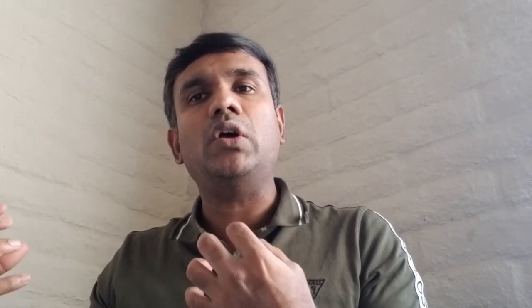So these are the key benefits of Docker and Kubernetes: first, reproducibility; second, scalability; third, zero downtime deployment and recovery of the old model in case something goes wrong. This is not the only way of deploying a model — there are multiple ways. But Docker and Kubernetes make it easy and faster to deploy a model so that it is up and running for you to act on new transactions. Thank you.